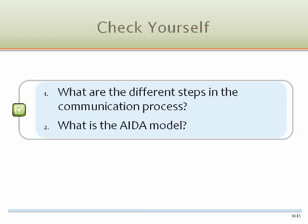Check yourself. 1. What are the different steps in the communication process? The sender, the transmitter, encoding, the communication channel, the receiver, noise, and the feedback loop. 2. What is the AIDA model? Awareness, interest, desire, action.